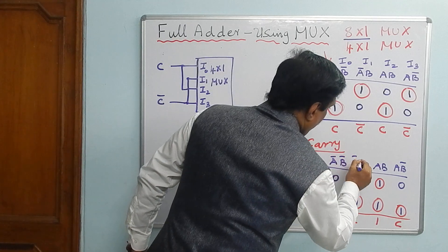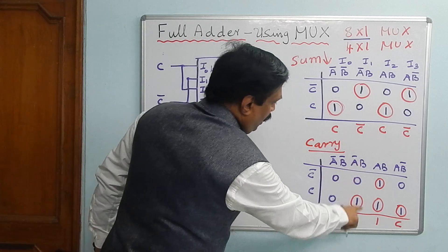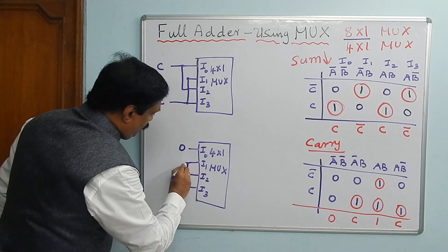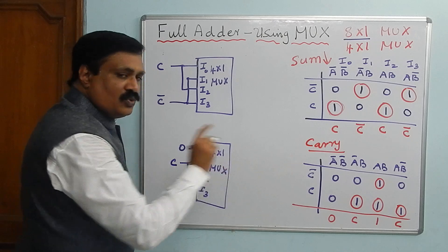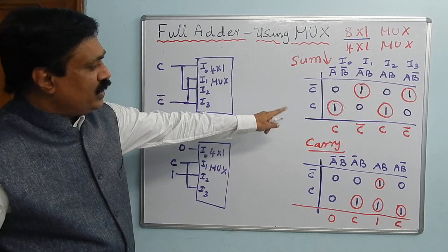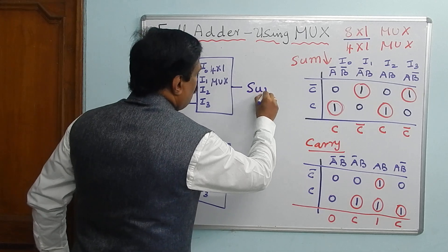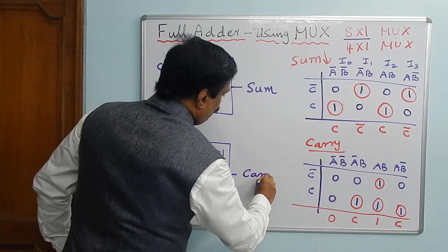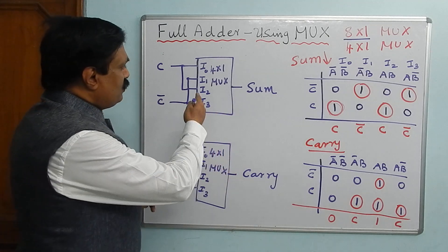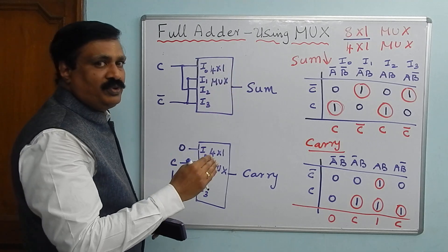For the carry multiplexer: I0 is 0, so connect I0 to 0. I1 and I3 both correspond to C, so connect I1 and I3 to C. I2 is 1, so connect I2 to logic 1. You have now connected all the inputs for both multiplexers. The sum output comes from the first MUX and the carry output from the second. A 4×1 multiplexer has four inputs and two select lines.